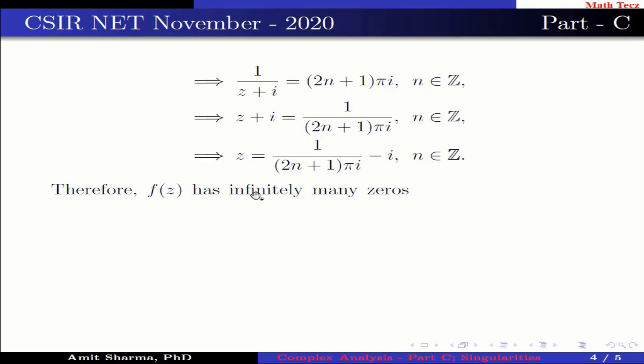Therefore f(z) has infinitely many zeros, which implies option 1 is wrong.